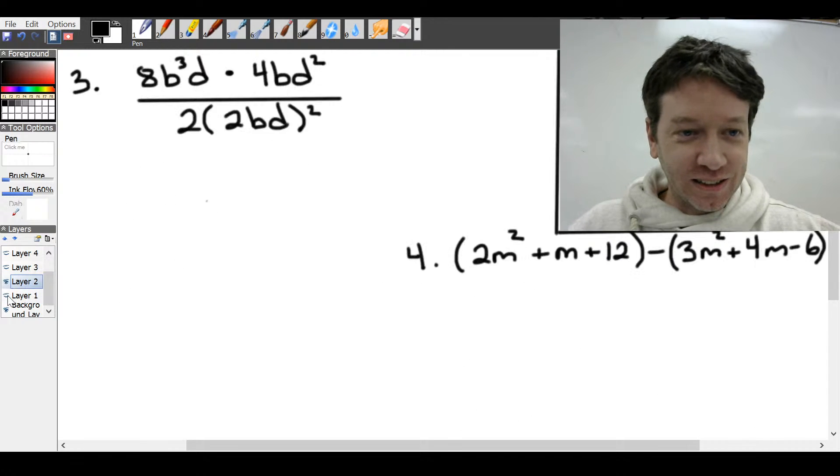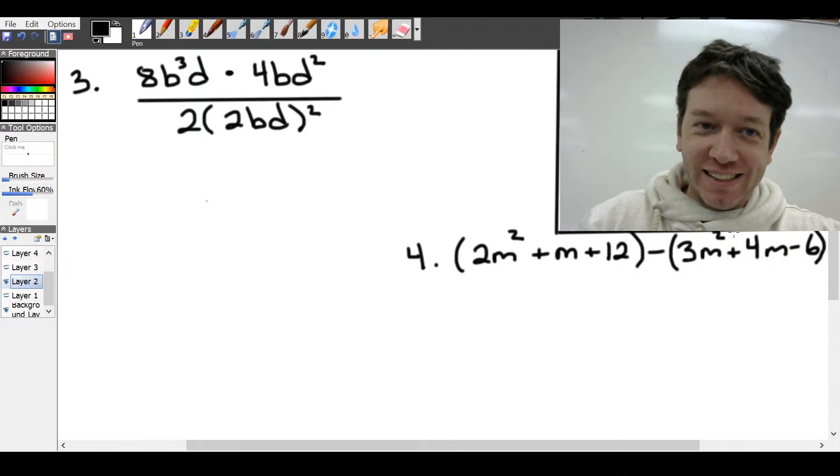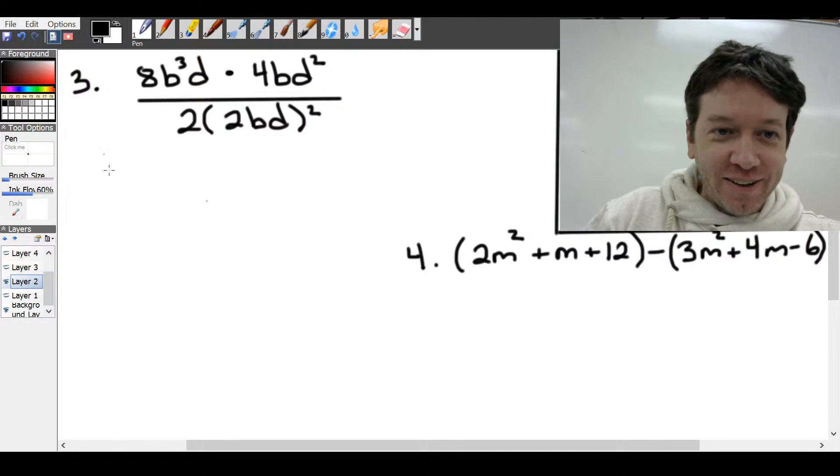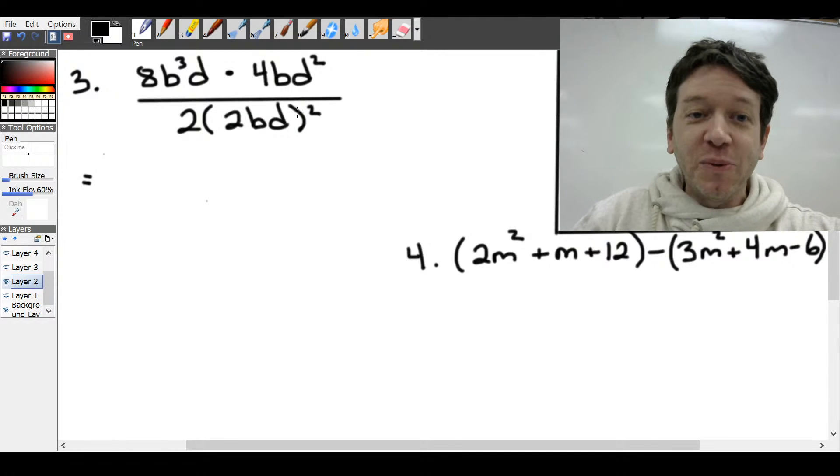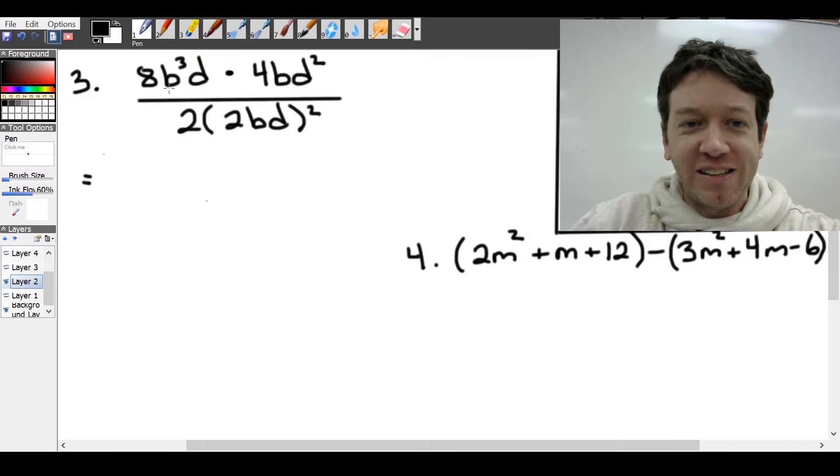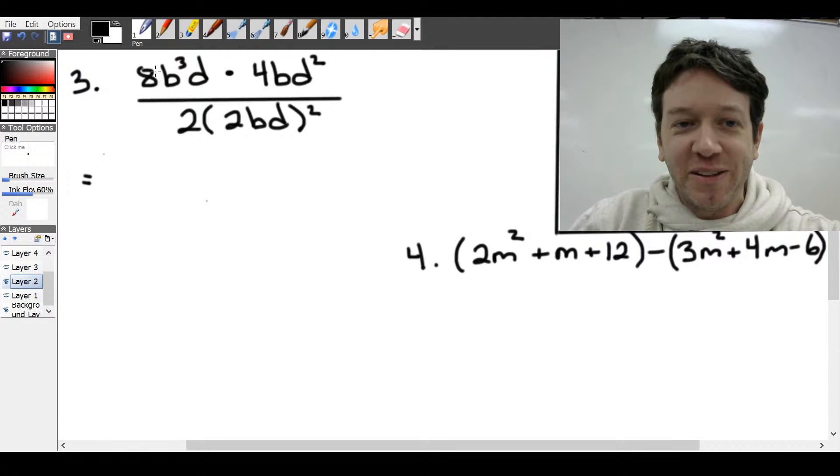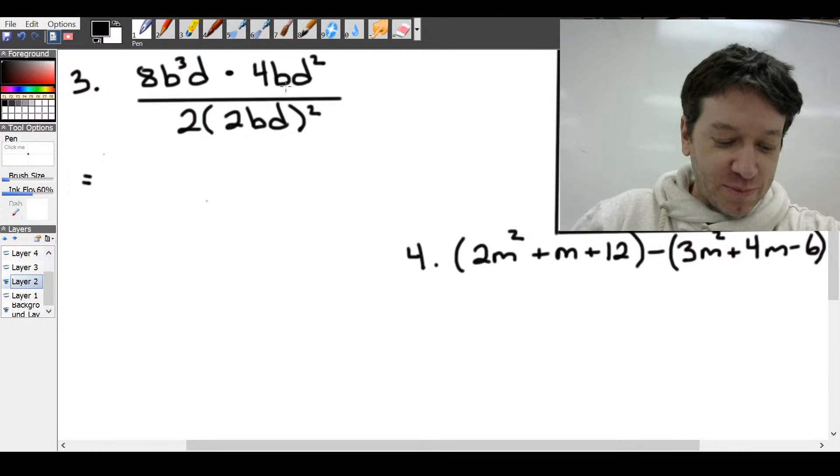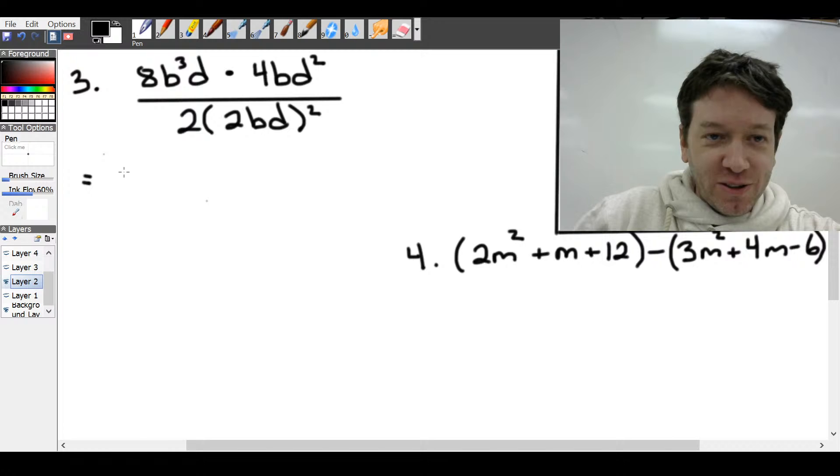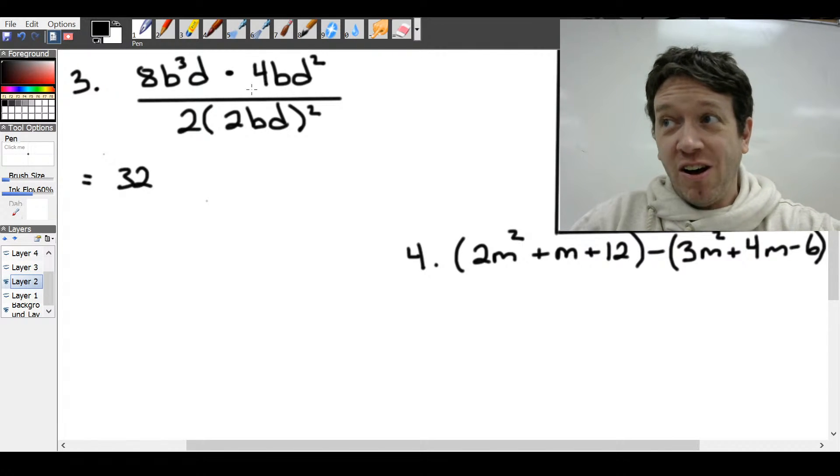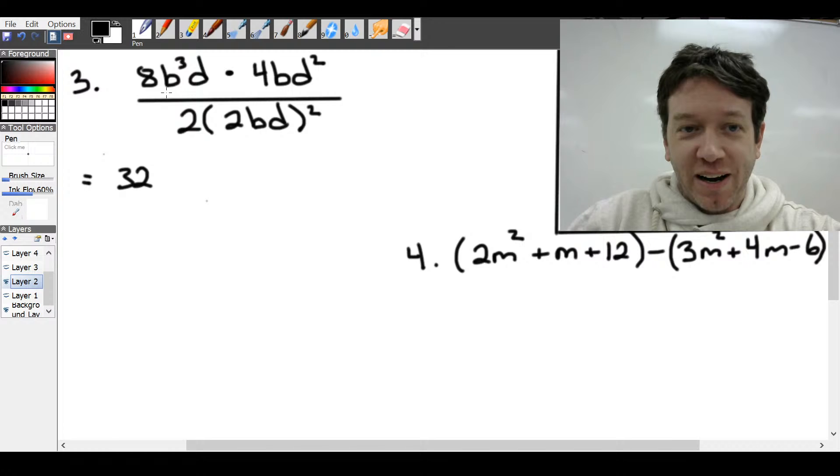We'll go on to these ones. Getting a little bit more complicated now. So this one, you need to remember your exponent laws. So for your exponent laws, let's look at the numerator. First, we'll deal with the coefficient. So 8 times 4, so that's just going to be 32. Then we have, look at b. Look at your common bases. So let's compare this b multiplied with this b.